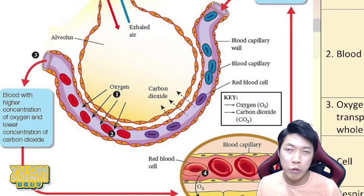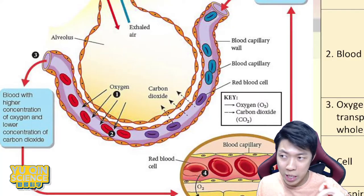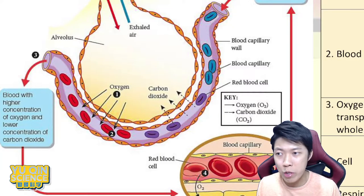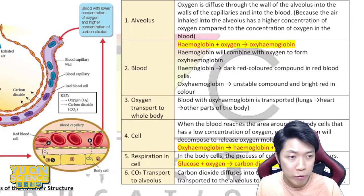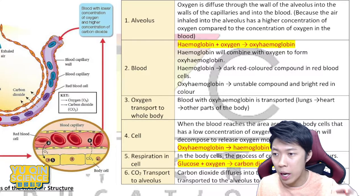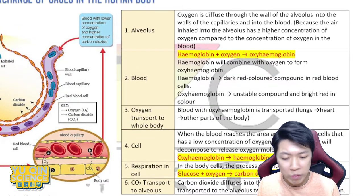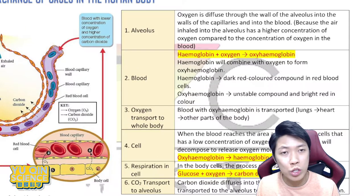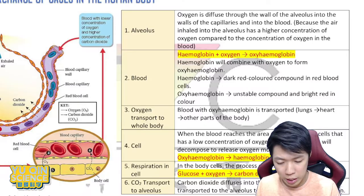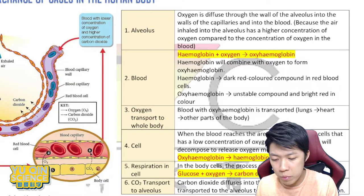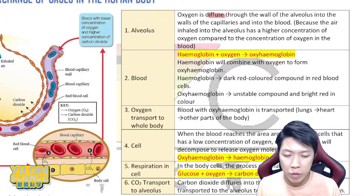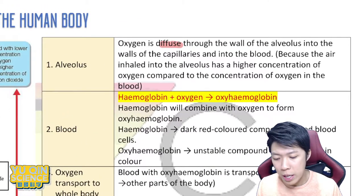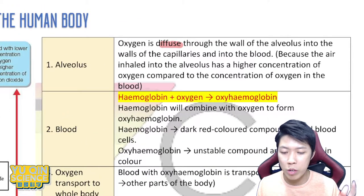Oxygen diffuses into your red blood cells — that means it will bind with your red blood cells. I've written down the sequence in six steps, very straightforward. Step one: oxygen is diffused through the wall of the alveolus into the wall of the blood capillary and into the blood.